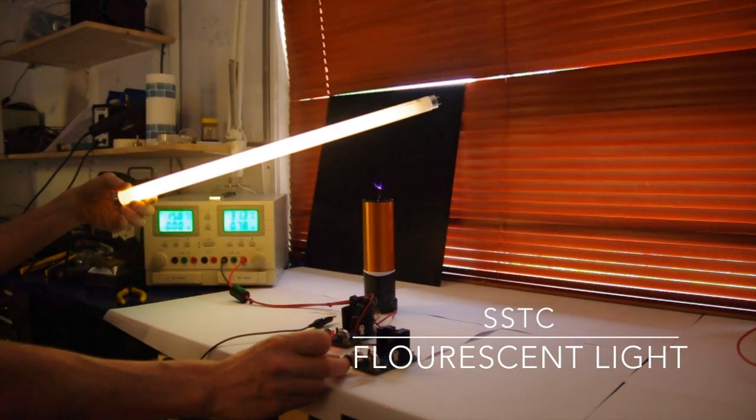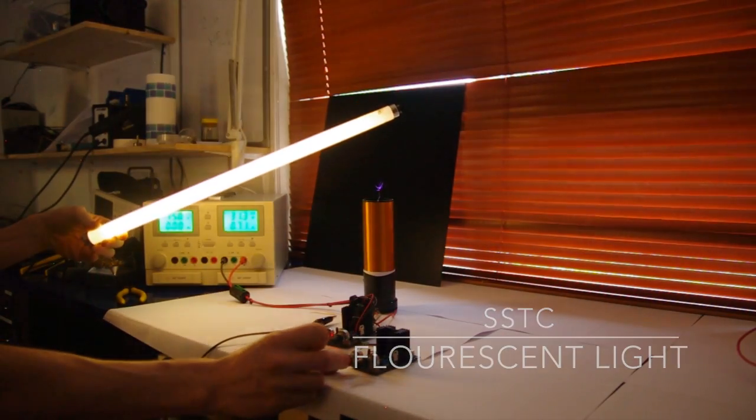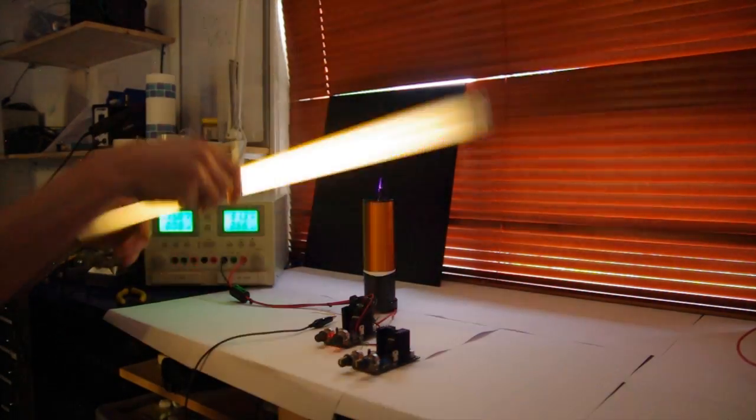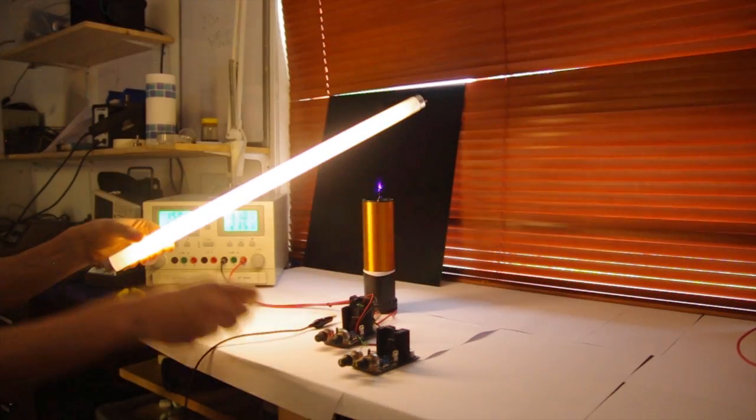You can see how intense the RF field around the Tesla coil is by holding a normal strip light nearby. Without even touching it, the tube lights brightly due to the induced currents.